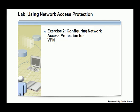In this exercise, we'll configure network access protection for VPN and then test the settings on a NAP client. The principal tasks for this exercise will be to configure routing and remote access settings, configure a connection request policy, configure network policies, configure client settings, and test the VPN connection.